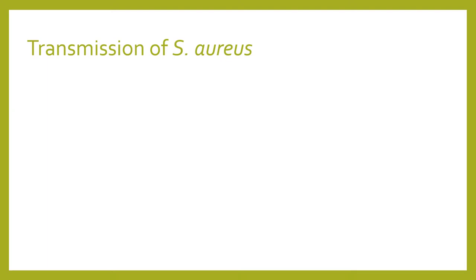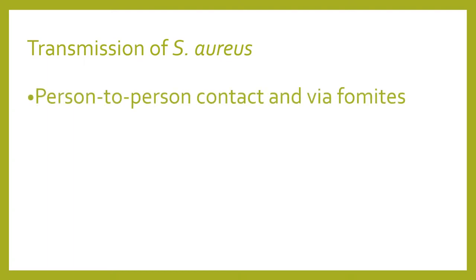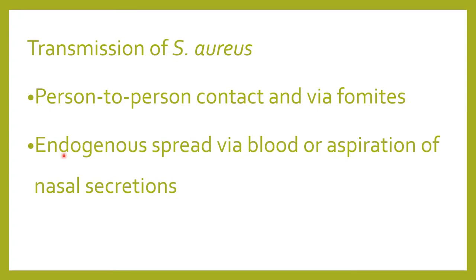How is Staphylococcus aureus transmitted? First is through person-to-person contact or via inanimate objects called fomites — like slippers, jackets, dresses, socks, and everything you borrow. It can also be transmitted through endogenous spread via blood or aspiration of nasal secretions. These are the routes of transmission.